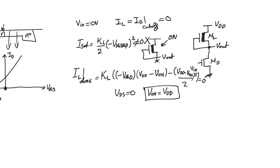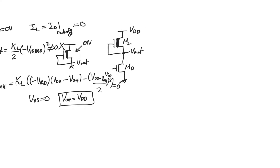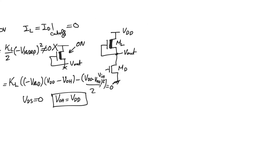This is what we wanted: V_output_high restored to VDD without needing two supplies as required by the enhancement load inverter. So V_output_high is VDD. Now let's find V_output_low. To find V_output_low, we use V_input equals V_output_high, which in this case is VDD. We equate the driver current with the load current and determine the regions of operation.